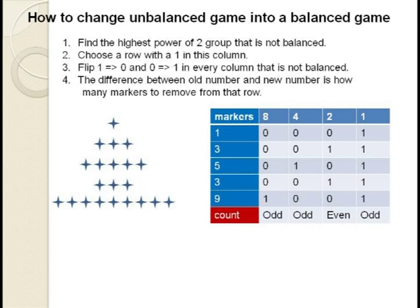Let's consider some examples. Suppose we have five rows with 1, 3, 5, 3, and 9 markers respectively. We can see from the table that the game is currently not balanced. We have an odd number of 1's, 4's, and 8's. The largest unbalanced power of 2 is 8, so we choose a row that has a 1 in this column. Row 5 is our only choice. Now we flip the binary digits for this row in every unbalanced column.